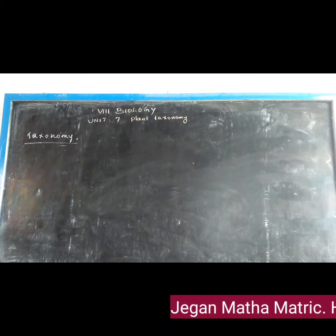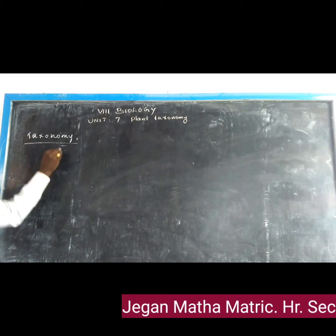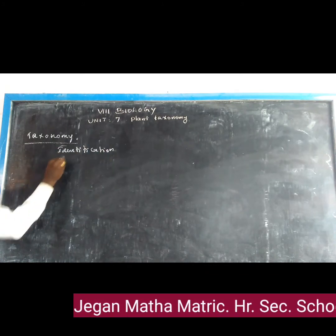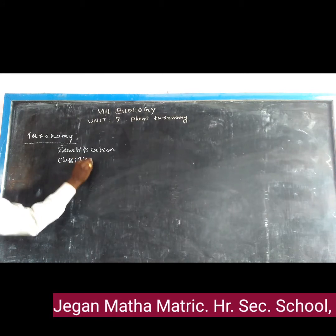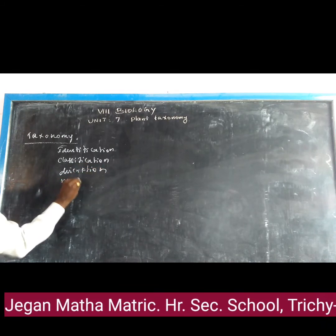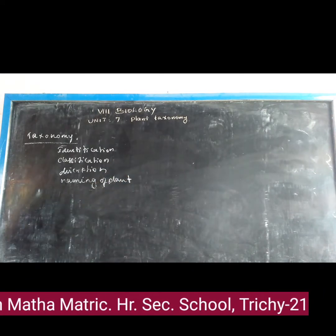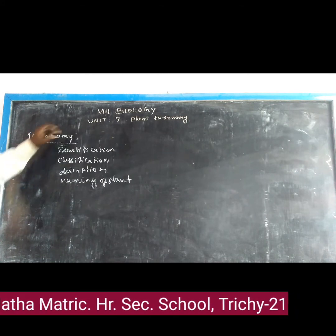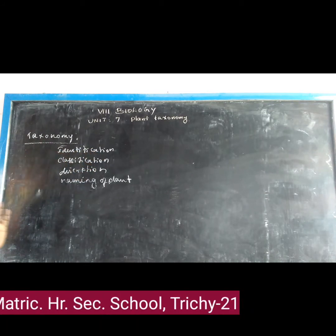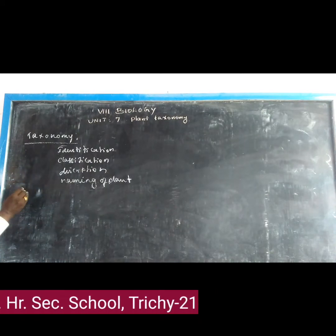Taxonomy is a branch of biology that deals with the identification, classification, description, and naming of plants. So taxonomy means a branch of biology which deals with identification, classification, description, and naming of plants.